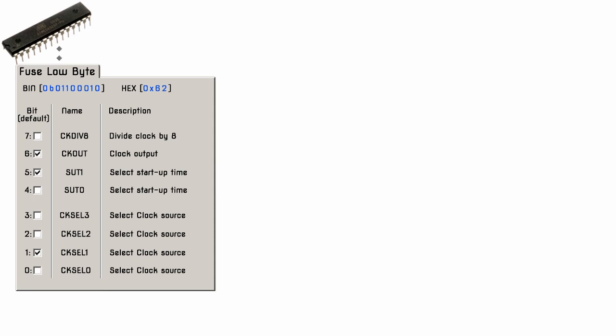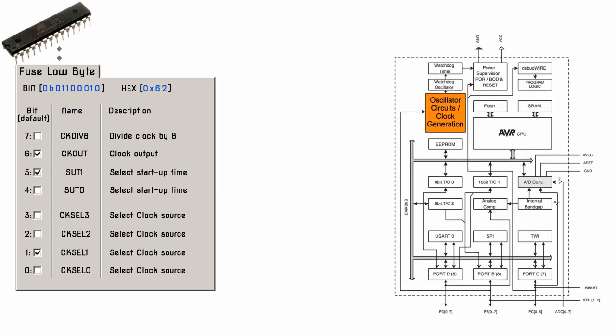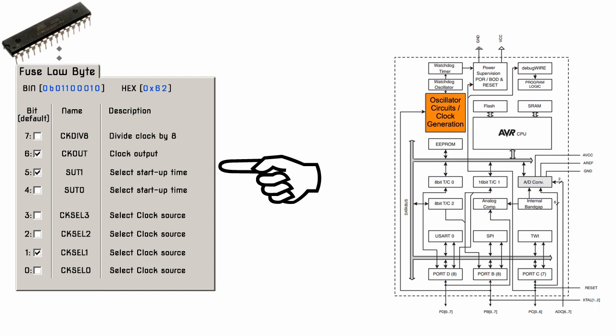In this video we will discuss programming the fuse bits contained in the fuse low byte. The low byte fuse deals with the clock source, how fast the chip will run, and how long it waits at startup. ATmega328P chips have a built-in RC oscillator with an 8 MHz frequency. New chips are shipped with this set as the clock source and the clock divide-by-8 fuse active, resulting in a 1 MHz system clock. The startup time is set to maximum with timeout period enabled.